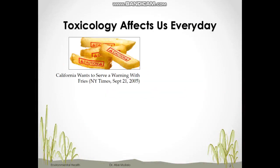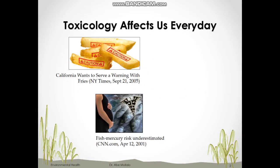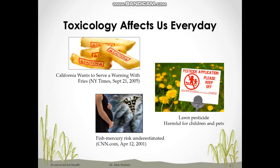Toxics are very close to us and can affect our everyday life. In 2005, the state of California wanted to put a warning label on french fries because, although they are one of the favorite foods in the US, they are soaked with trans fats, sodium, and simple carbs that have caused cancer in laboratory rats and mice. Another example is fish — some types such as swordfish or tuna can contain high levels of mercury which can cause adverse health impacts such as Alzheimer's, Parkinson's, and depression. Lawn pesticides, mainly used for killing insects, can also be very harmful especially for pets and children.